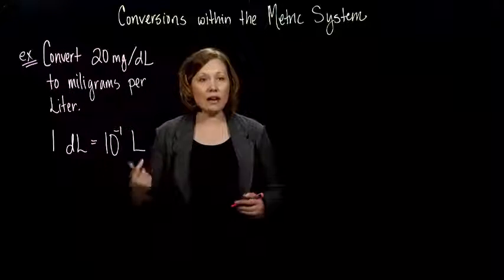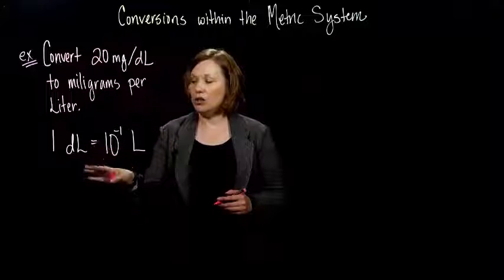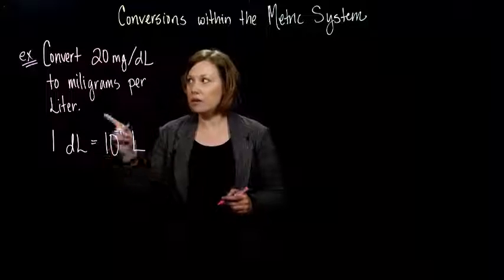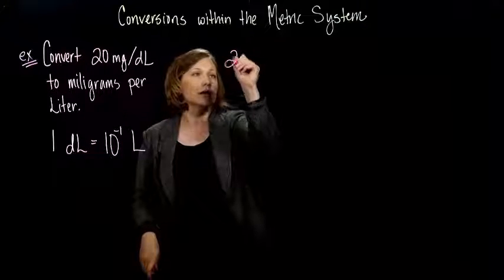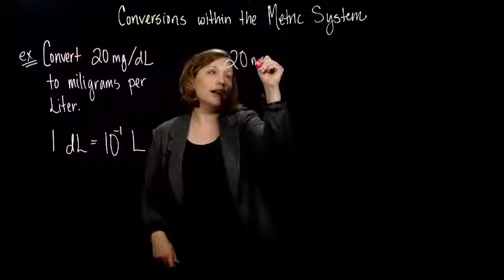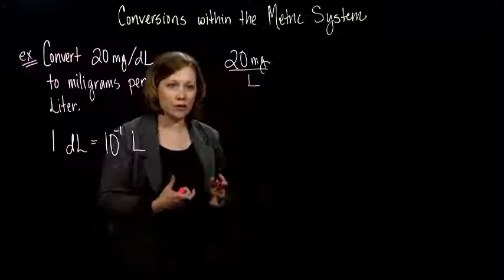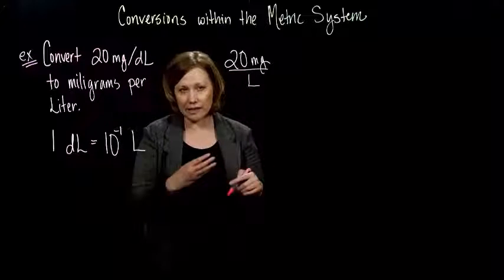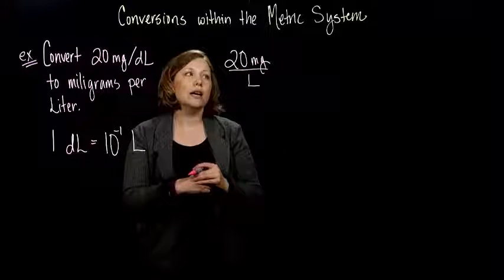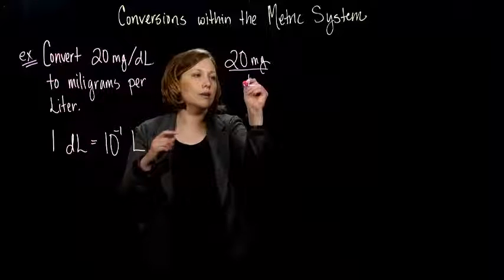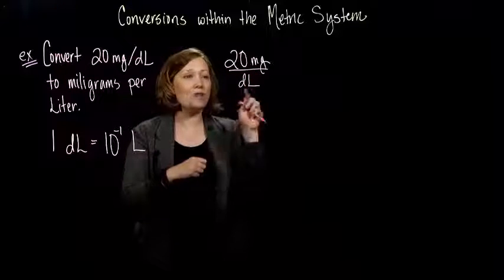Alright, so now we actually have the information that we need to do this conversion. So, I have 20, I like to write things as a fraction, because especially when doing dimensional analysis, I think it's easier to see what cancels and what doesn't. And I want, excuse me, it's deciliter, and I want liters.